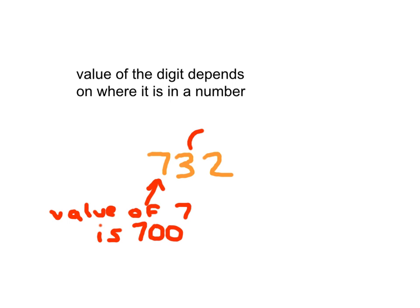Since the 3 is in the tens place, its value is 30. The value of the 2 is 2 because it's in the ones place. So the value of a particular digit depends on where it is in a number.